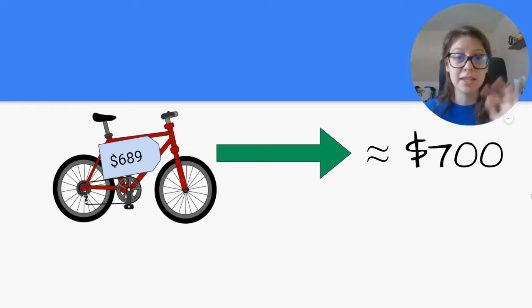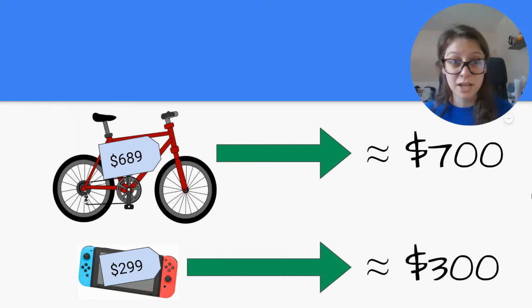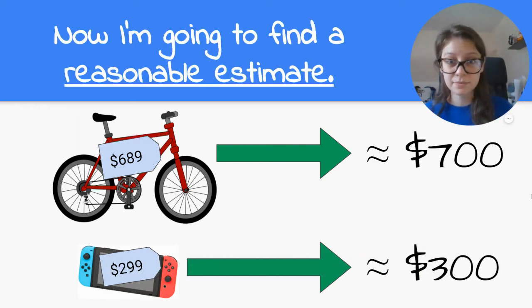That squiggly equal sign means about. Then I thought, the Nintendo Switch cost $299, so that's going to be about $300. So now I'm going to find a reasonable estimate. To do that, I've already rounded these two numbers, and then I'm going to add them together to get my reasonable estimate for how much both of these things cost.